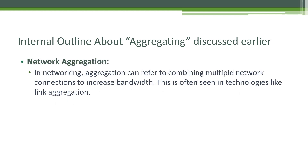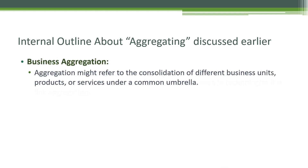Business Aggregation: Aggregation might refer to the consolidation of different business units, products, or services under a common umbrella. Market Aggregation involves combining similar products or services into a single group for analysis or reporting. For instance, sales of different smartphone models might be aggregated to analyze overall market share.